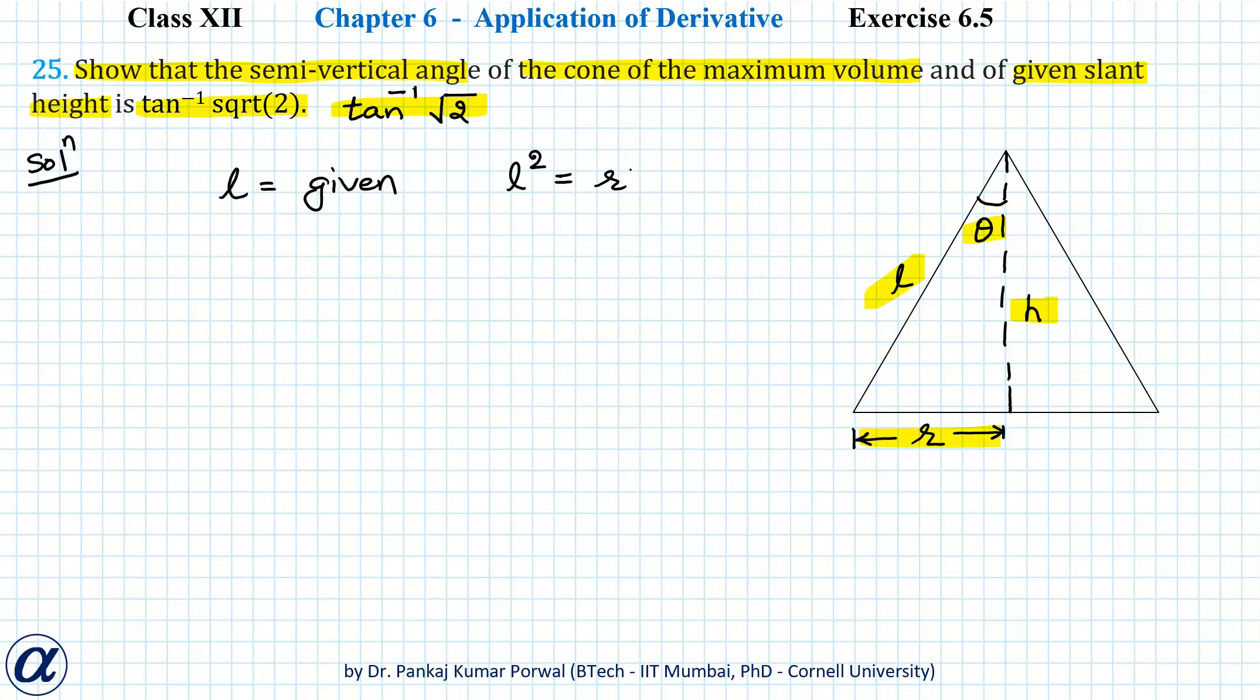We want to maximize the volume, which can be written as 1 by 3 π r squared h. Note that there appear to be two variables in the expression for volume.